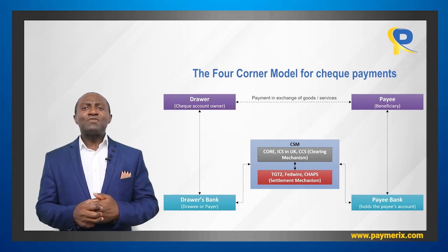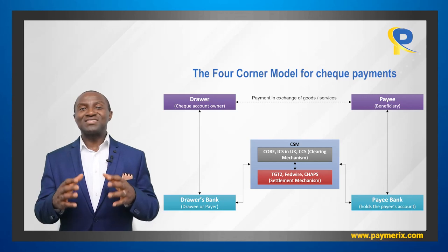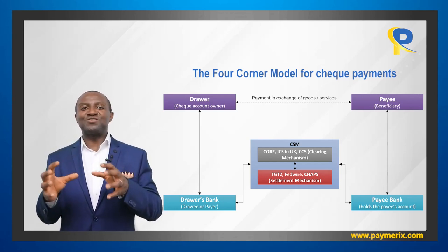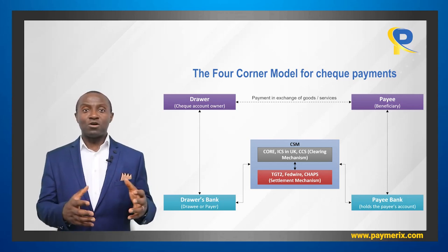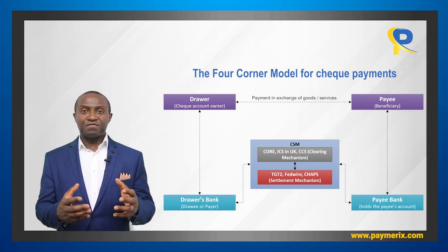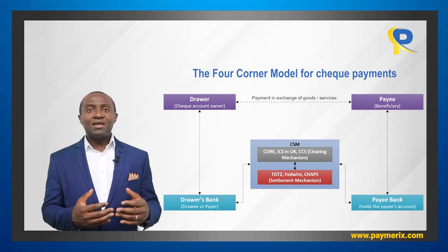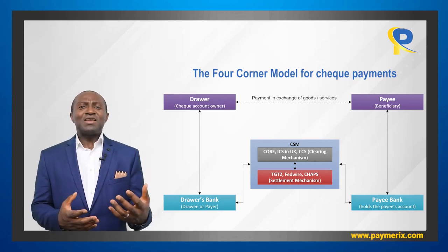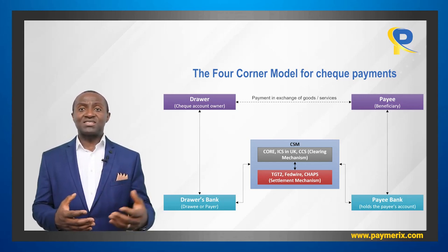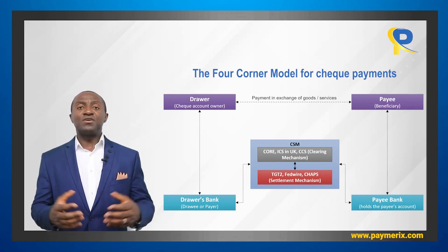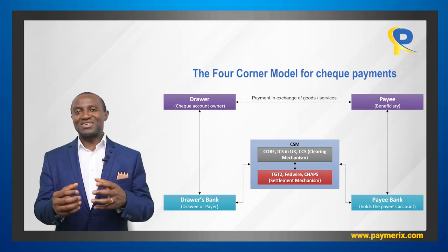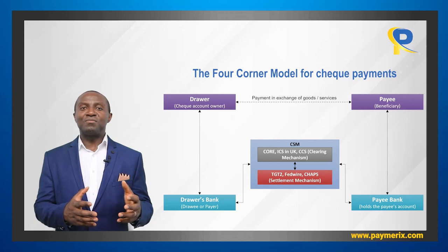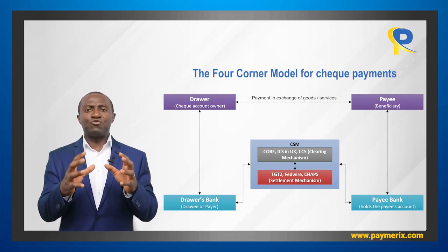One last example: the four corner model for check payments. End party one becomes the drawer, bank one becomes the drawer's bank or payer of the check, end party A becomes the payee, and bank A is the payee bank. Drawer's bank and payee bank are again interconnected through the CSM. Clearing systems include the check clearing system in the United States, the CORE system in France, and the image clearing system in the United Kingdom. Settlement systems are Fedwire in the USA, Target 2 in SEPA, and CHAPS in the UK for the pound sterling.